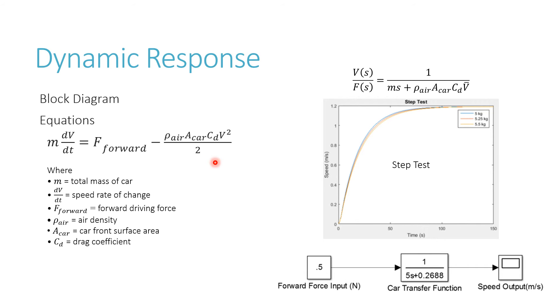We took this equation and linearized it and transformed it into the Laplace domain so we can have a transfer function. This is a block diagram of our system. We have the forward force input here, and then this transfer function relates that force input to the output speed of the car.